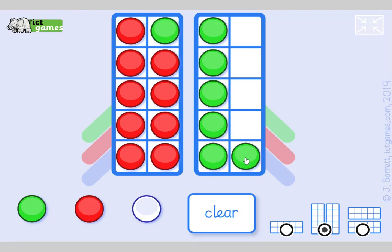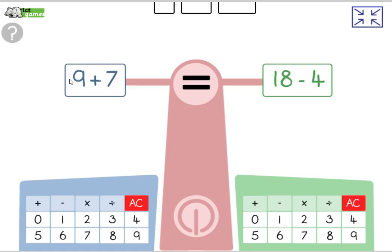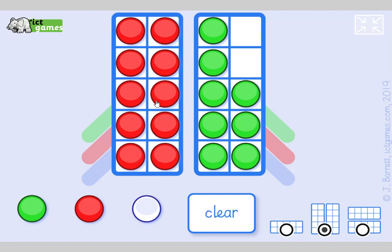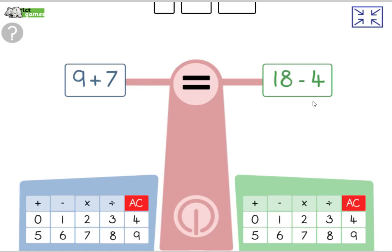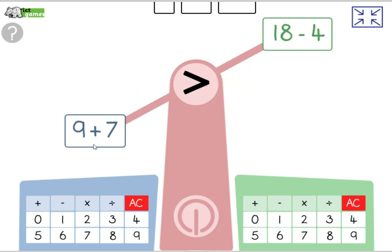18 take away 4. 18 take away 4, let's do that one. Here's 18, 10 and 8. Take away 4. Now I know that 8, this is 8, this is an 8 here. And if I take away 4, it only leaves 4. So the answer is going to be 10 and 4, 14. So the answer is 14. So this one's 16, this one's 14. Which way is it going to go? Yeah, 9 and 7 is greater than 18 take away 4.